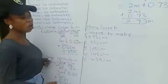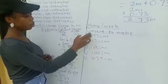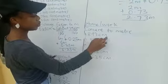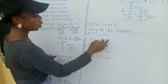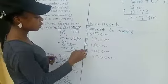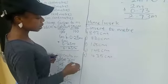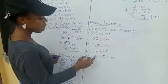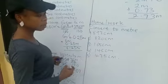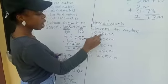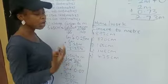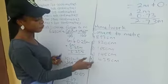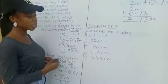This is your own work. You have to convert to meters: 893 centimeters, 820 centimeters, 165 centimeters, 145 centimeters, and 435 centimeters. I will do number one for you so that you'll be able to do it at home. From number two to number five, you do it at home.